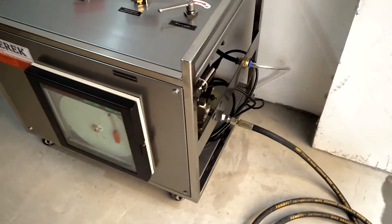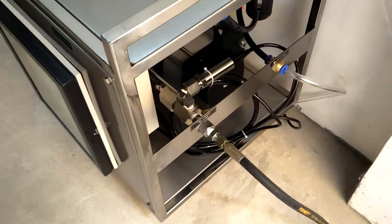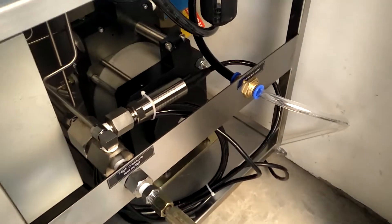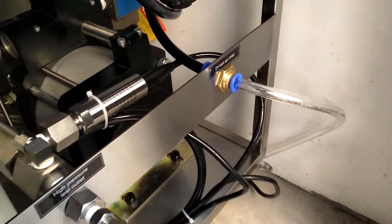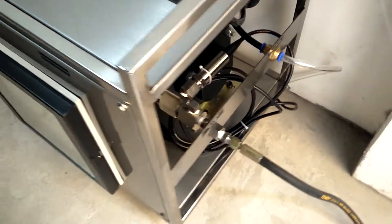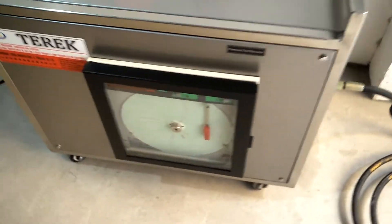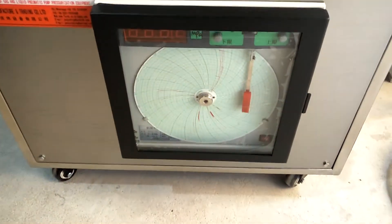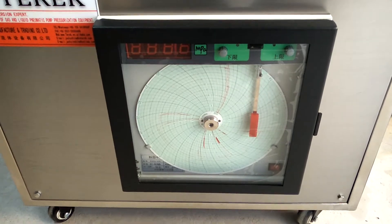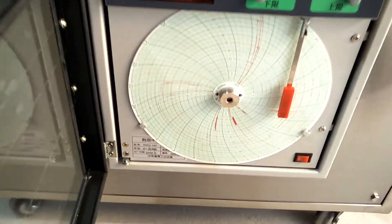First step, connect the air compressor to this driven air inlet, connect the power, turn on the chart recorder switch.